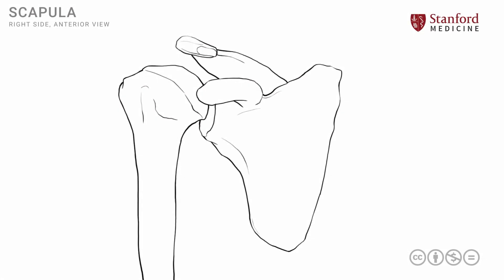In this lesson, we will look at some of the shoulder muscles from an anterior viewpoint. We'll start by looking at the two bones, the scapula and the humerus, that participate in the formation of the shoulder joint.